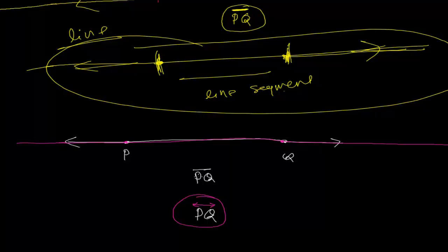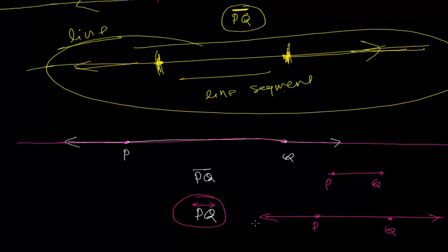With arrows on both sides, this means PQ is a line, not a line segment. A line segment PQ means it is fixed between those two points. If you are asked to draw the PQ line, you make it with arrows on both ends and mark P and Q somewhere along it. So PQ is a line passing through points P and Q. A line segment has a fixed distance, but a line does not have any fixed distance.